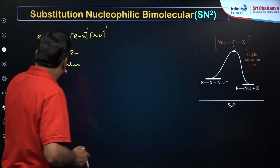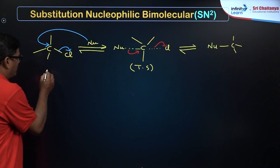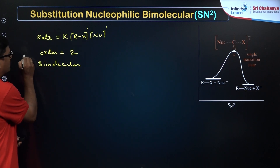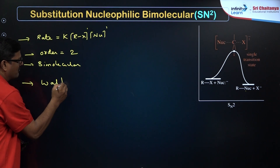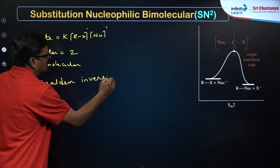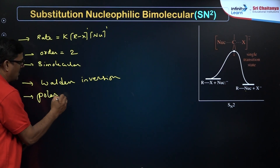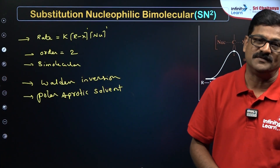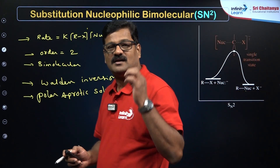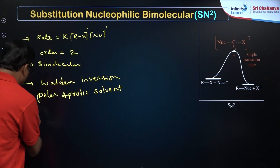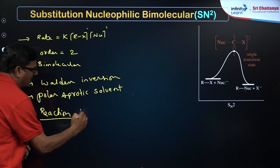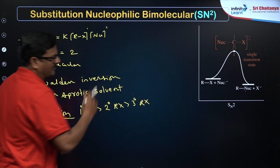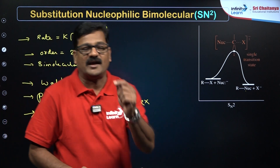In SN2, if you start with a plus isomer, you get the minus isomer — complete stereochemical inversion is seen, which is called Walden inversion. Polar aprotic solvents favor SN2 reactions. The reactivity in SN2 is primarily decided by the nature of the alkyl halide: primary alkyl halide is more reactive than secondary, which is more reactive than tertiary alkyl halide.